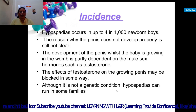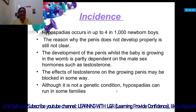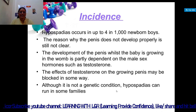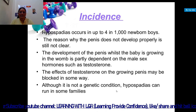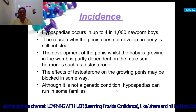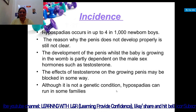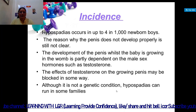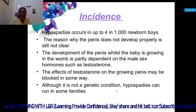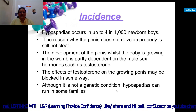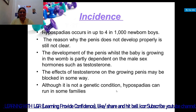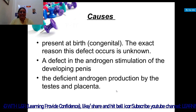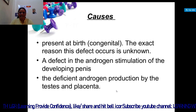The reason why the penis does not develop properly is still not clear. Development of the penis while the baby is growing in the womb is partially dependent on male sex hormones such as testosterone. Because of an imbalance of testosterone this problem occurs, and the effects of testosterone on the growing penis may be blocked in some way.